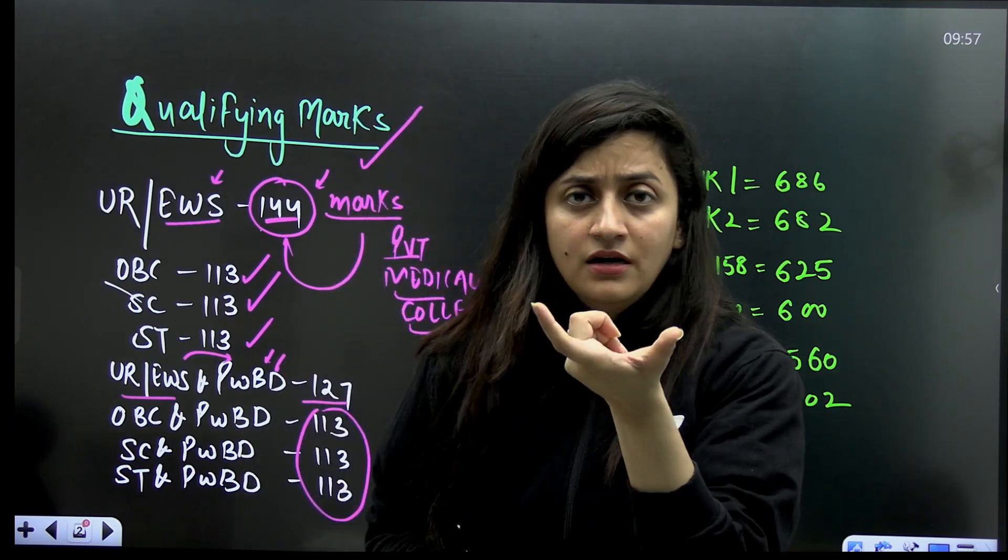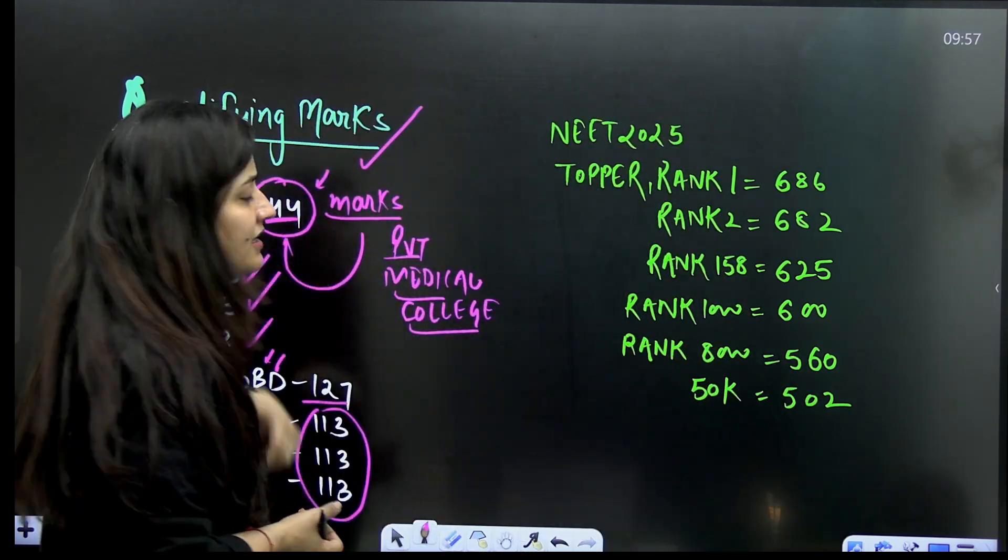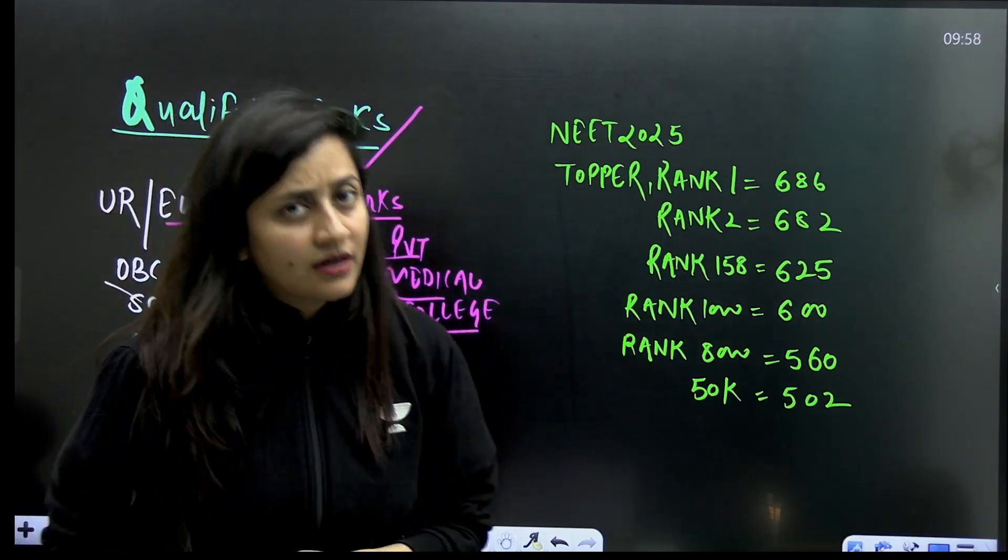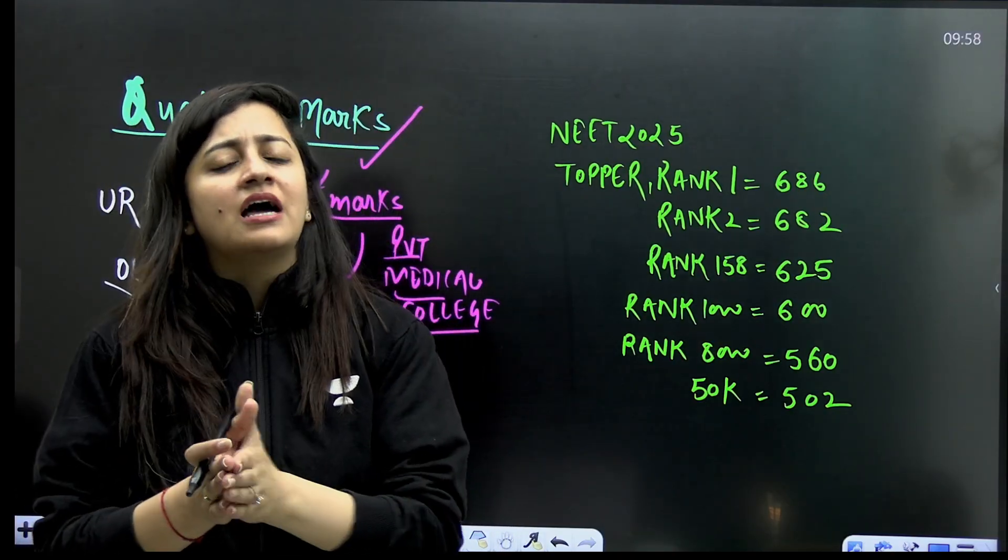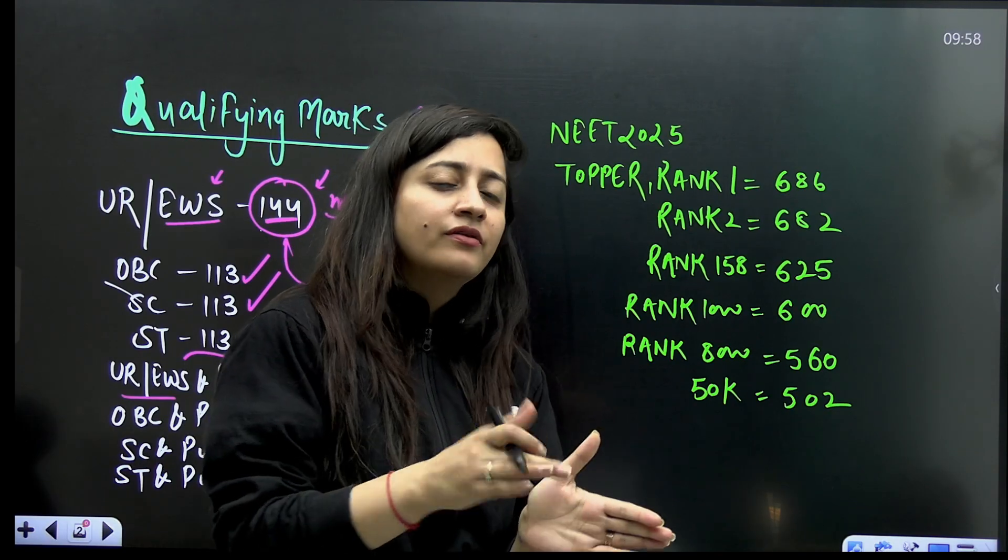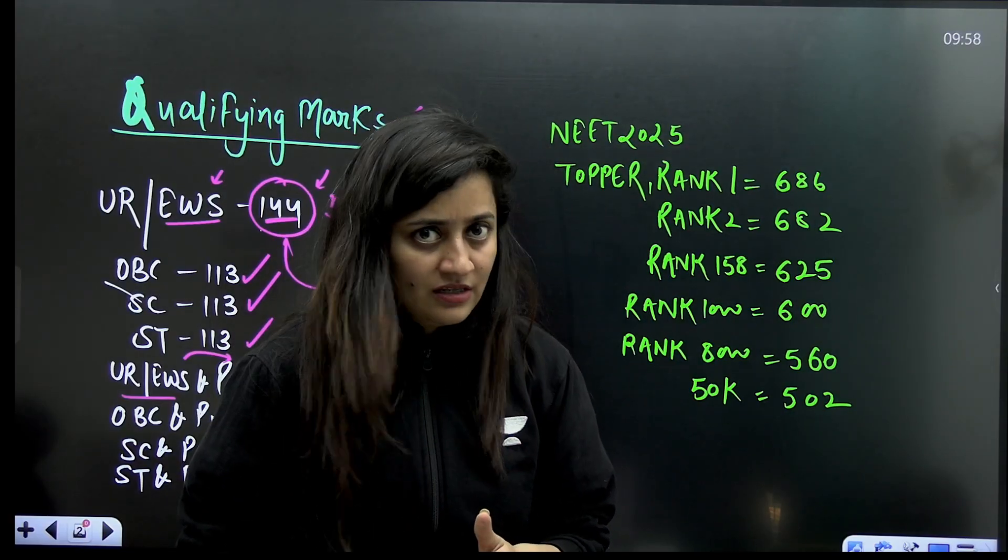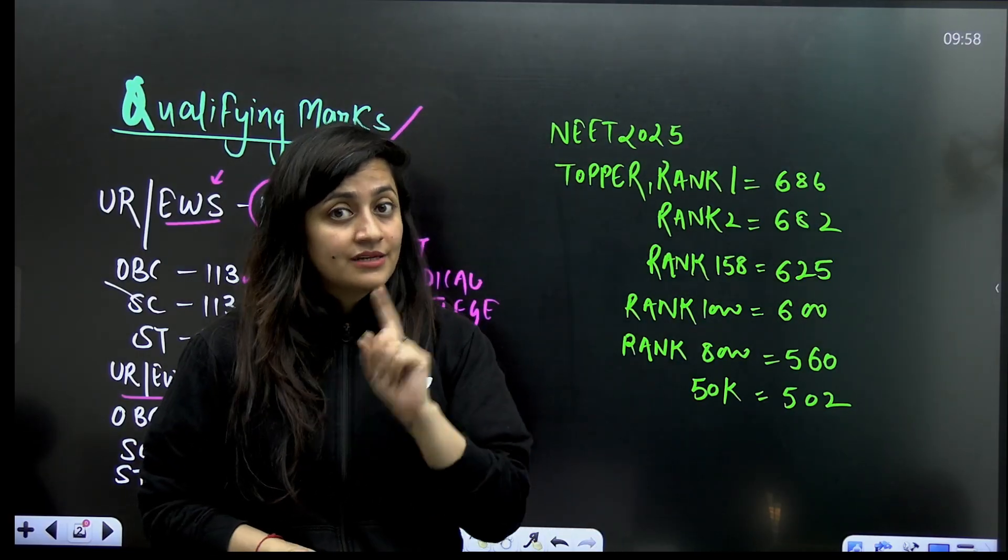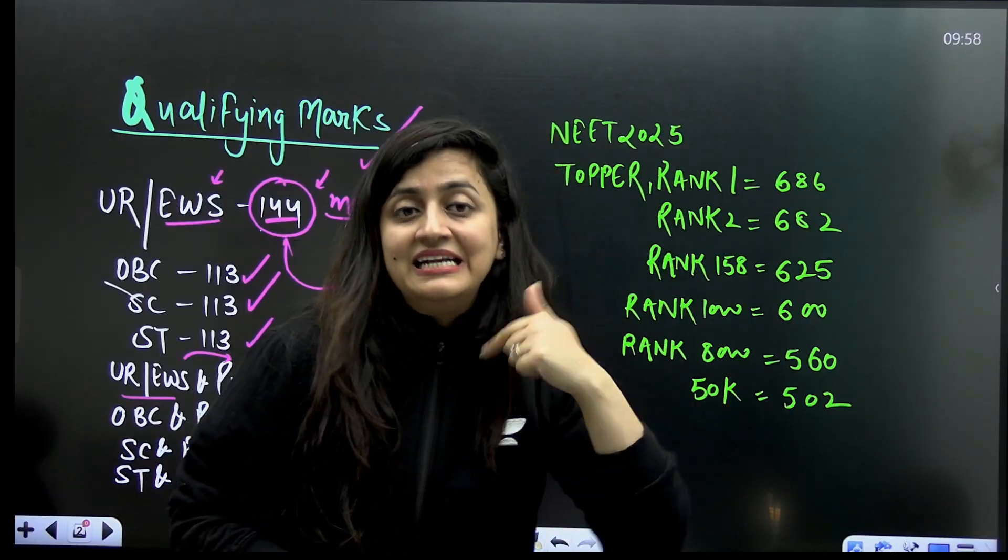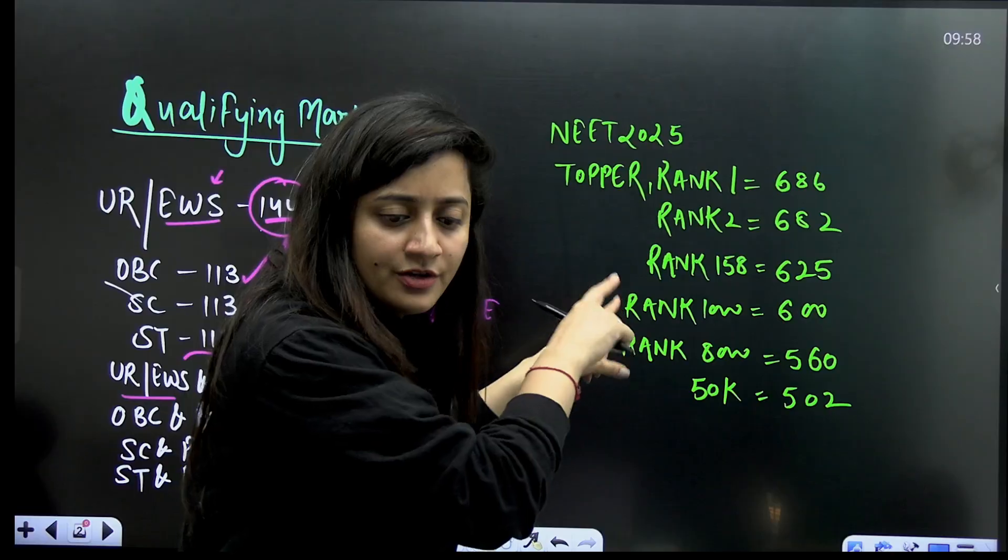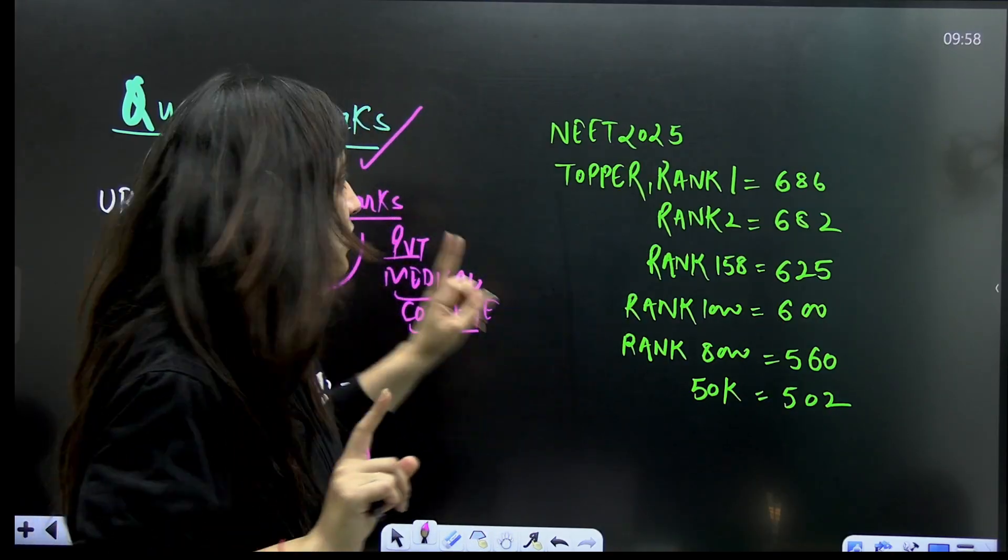But are we going to get admission if we get marks like in general category above 144? No, we have to clear the cutoff. This time the cutoff was quite low - you can compare it with the cutoff of 2017. But number of aspirants in comparison were more, though remember one thing: this time even seats are more than 2017.